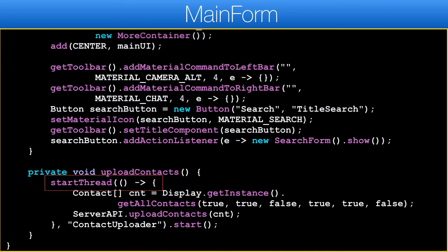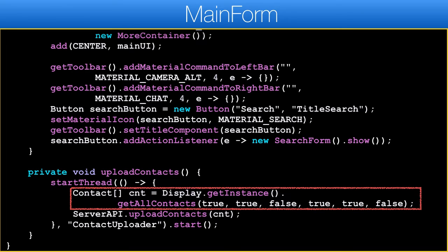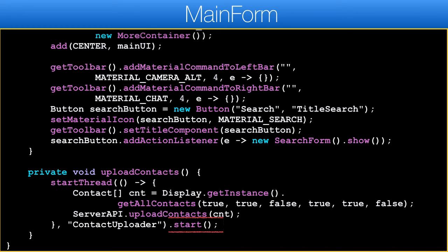Now we can implement the upload contacts method. We need to fetch contacts from the system, and it makes sense to do this on a separate thread as this is a heavy task. When we fetch the contacts we specify the fields we are interested in — if we specify fewer fields the fetch operation will be faster. Despite the name of the start thread method we still need to invoke start on the returned thread.